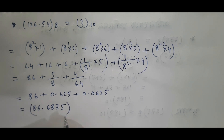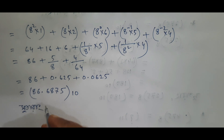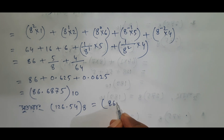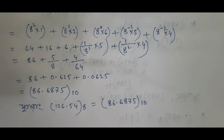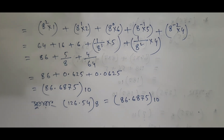This is an octal number. This is an octal decimal number. So we can write this: we can write it as follows. 1, 2, 6.54 — this is an octal number. This number in decimal form is 86.6875. This is a decimal number. So we can write: 1, 1, 6.6. This is the octal-to-decimal conversion.